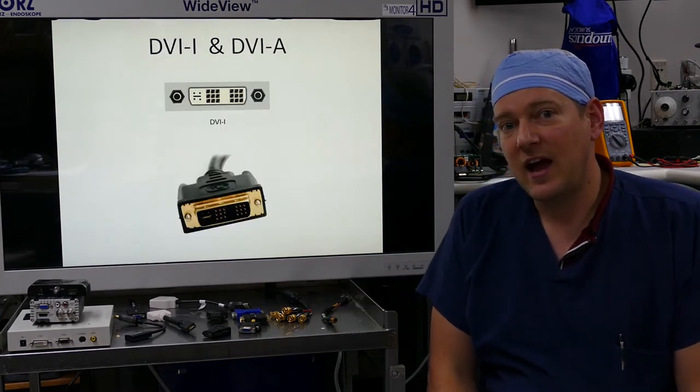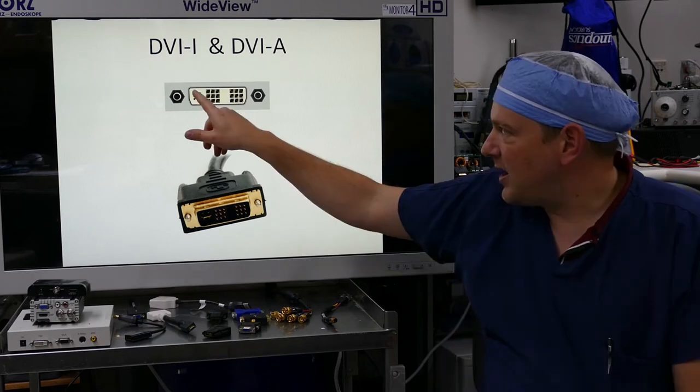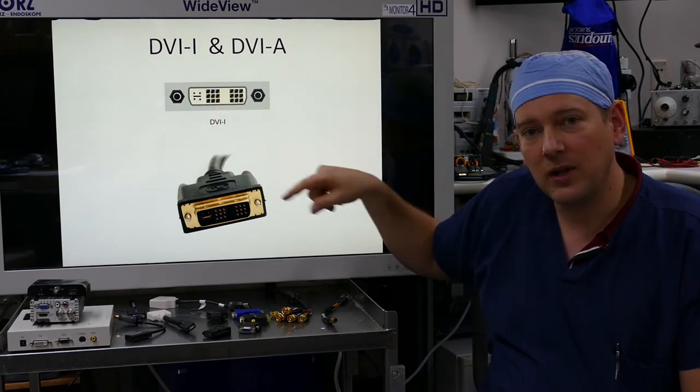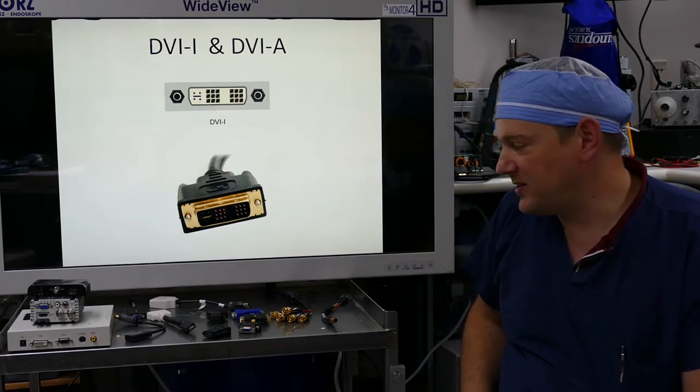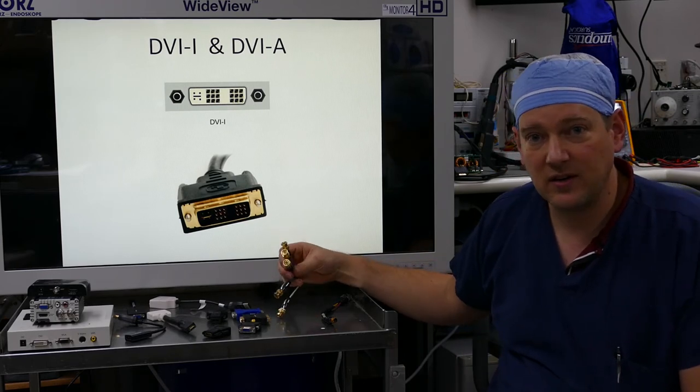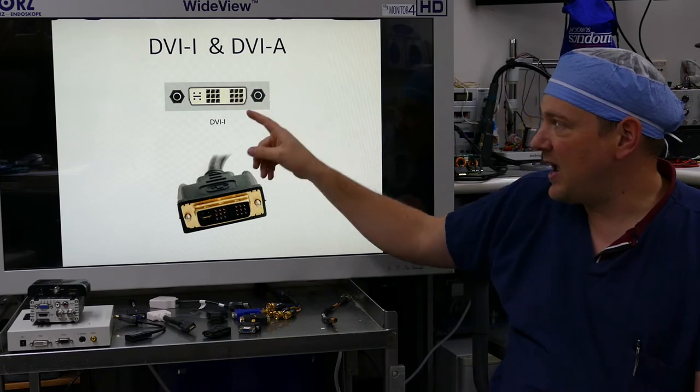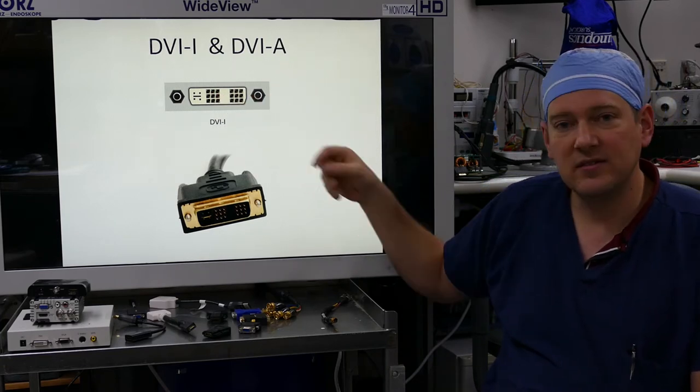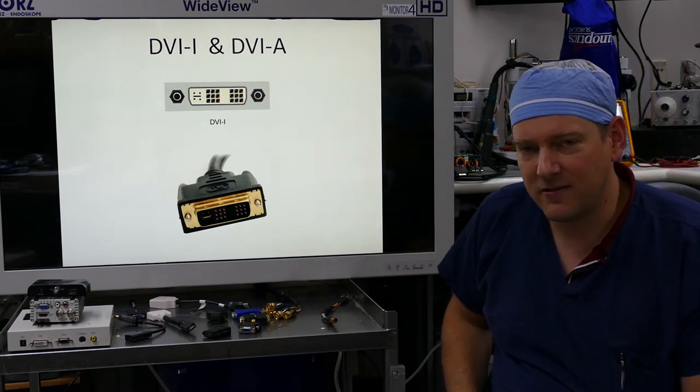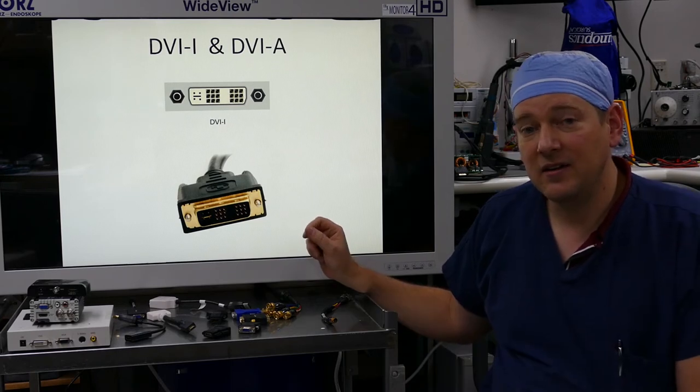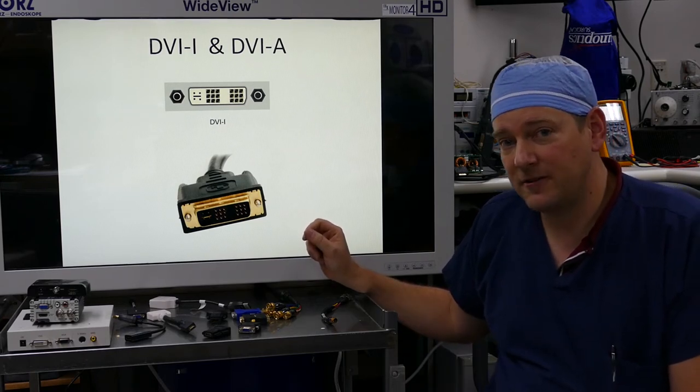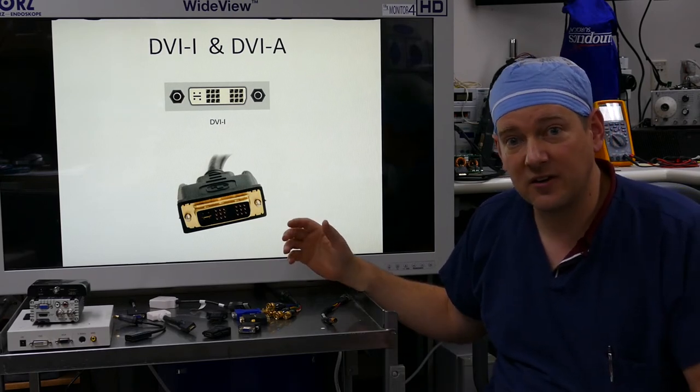DVI-I and DVI-A. DVI-I has four pins right here along the blade, and those four pins are basically the same thing as an RGB signal. Down here you'll see a DVI-I. DVI-A actually has only a couple pins in the connector, and you'll almost never see those. DVI-I and DVI-A can also be high-definition channels, albeit analog signals.